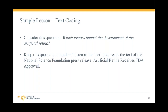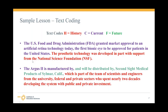Keeping the question in mind — 'Which factors impact the development of the artificial retina?' — we've established three codes: H for history (anything from the past that contributed to development), C for current (something happening in the present), and F for future (something that will happen). These are the codes students use as they work through the text.